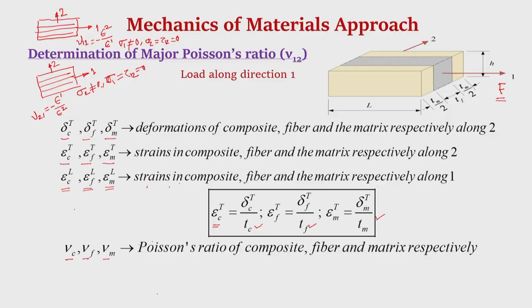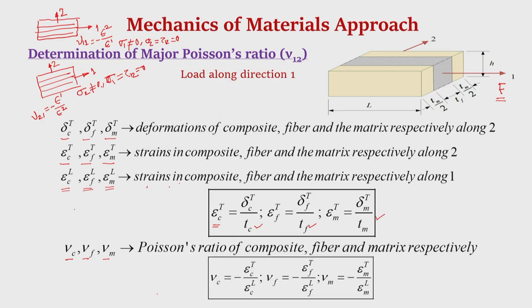Suppose the Poisson's ratios of the composite, fiber, and matrix are mu_C, mu_F, and mu_M respectively. By definition of Poisson's ratio, we can relate the transverse strain to the longitudinal strain. The Poisson's ratio of the composite mu_C is the ratio of transverse strain epsilon_CT to longitudinal strain epsilon_CL. Similarly, the Poisson's ratios of the fiber and matrix are defined by the corresponding ratios of transverse strain to longitudinal strain when load is applied along direction 1 only.